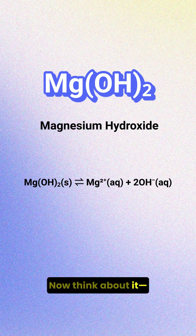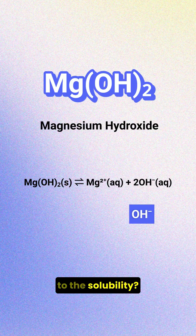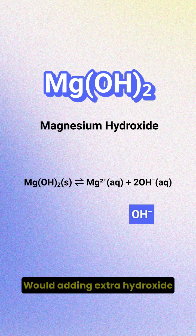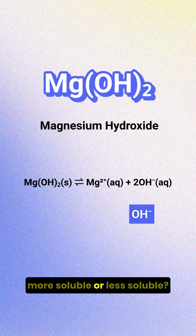Now think about it. If we add a basic solution, meaning we add more hydroxide ions, what would happen to the solubility? Would adding extra hydroxide ions make magnesium hydroxide more soluble or less soluble?